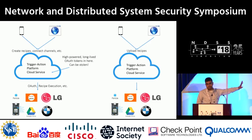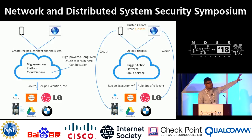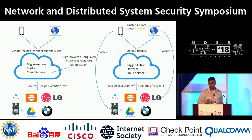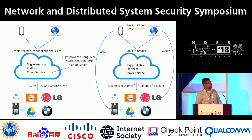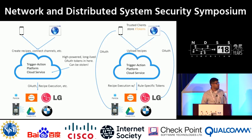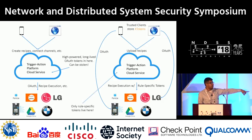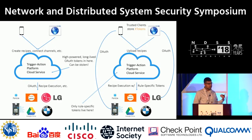The other picture shows what the decentralized system looks like. As before you have the cloud service, but now it's untrusted. We designate the clients as trusted clients, disconnected from the trigger action platform — they are not implemented by the same entity, similar to how an SSH client and server aren't necessarily implemented by the same entity. These trusted clients negotiate the OAuth tokens, recipe-specific tokens, rule-specific tokens, and X tokens. Only the rule-specific tokens reside in the untrusted cloud, and anyone holding a rule-specific token must provide proof that a trigger actually happened before they can use it.